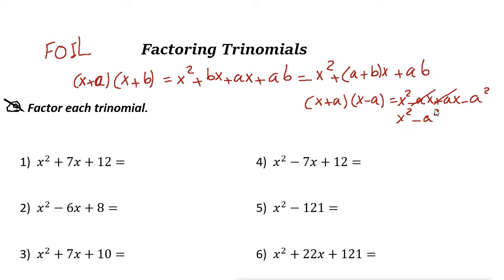So those two cancel out and you get x squared minus a squared. Whenever you have a perfect square subtracted from another perfect square, you can write the factors as the root of the first plus the root of the second, times the root of the first minus the root of the second. Let's try some examples.